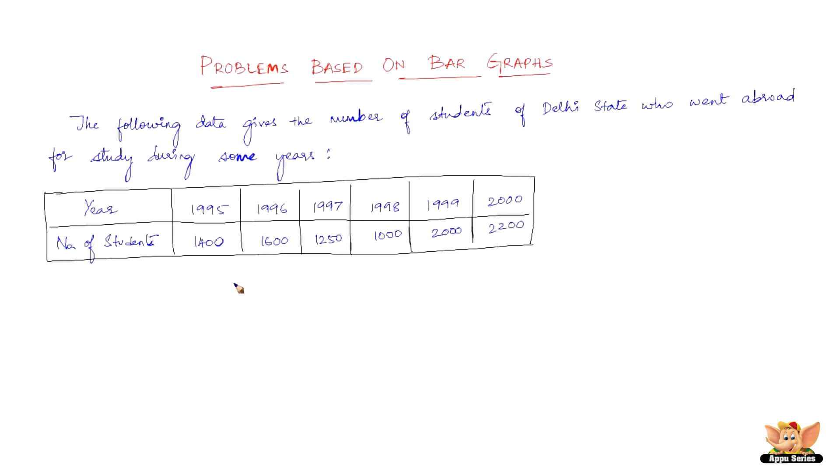Now let us see how do we go about solving this problem. We need to represent the data with the help of a bar graph. In order to construct a bar graph representing the data given here, we need to follow the following steps. Take a graph paper and draw two mutually perpendicular lines OX and OY.